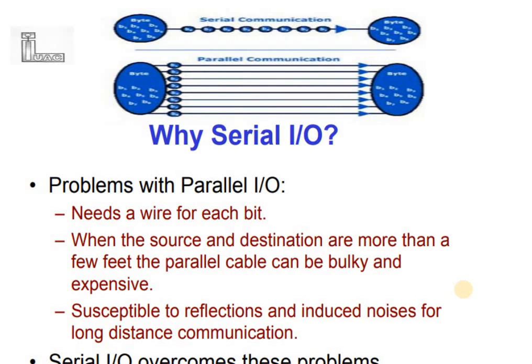As you can see on the screen, how serial and parallel communication take place. Parallel communication means it needs a wire for each bit — suppose a character is made of 8 bits, it needs 8 different wires plus the control wires. When the source and destination are more than a few feet, parallel cables can be very bulky, expensive, and very susceptible to reflections. Induced noise is a big problem for long-distance parallel communication.